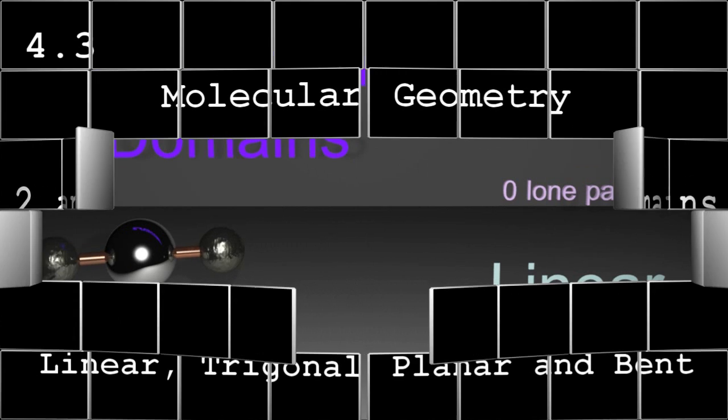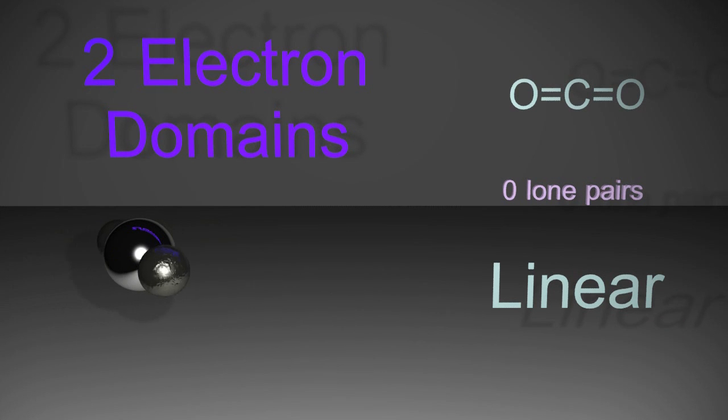Two and three electron domains, starting with two electron domains. Well, that molecule is obviously linear, but why is that?